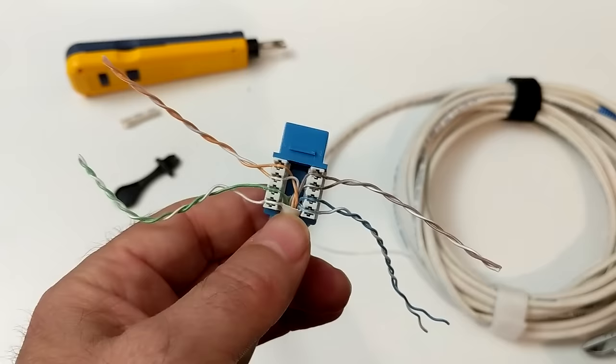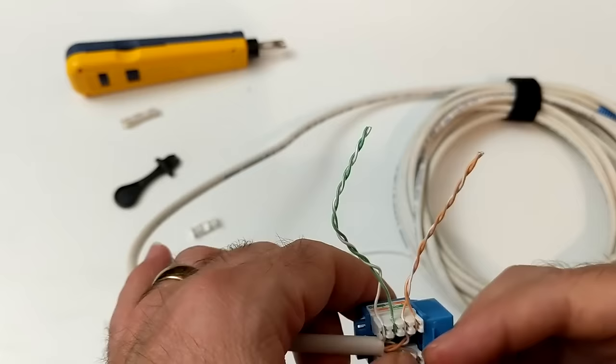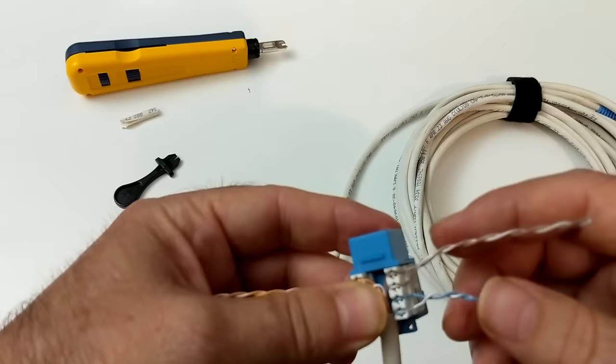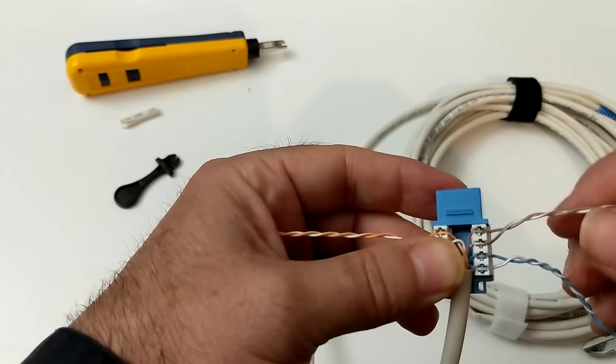I've got those wires all fed into the appropriate slots. Before we start doing any cutting or punching down or terminating, we just want to do one more quick check just to make sure that we've got our colors right because we don't want to get done and then find out we've got our colors wrong. Looks like I've got this one right.